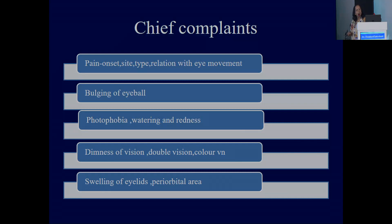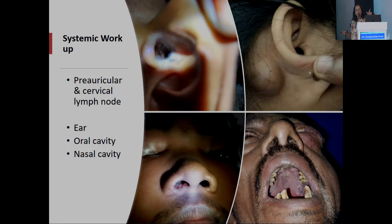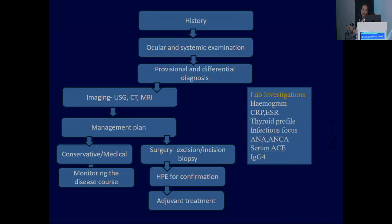Orbital inflammation patients come to you with pain, bulging of the eyeball, photophobia, watering, redness, dimness of vision, double vision, color vision defect if the orbital apex is involved, swelling of the eyelid and periorbital area. Don't forget to examine the mouth because there may be a septic focus, or nasal bleed — there may be mucormycosis or sinusitis. Also check for post-auricular lymphadenopathy. Don't forget to do a detailed examination.